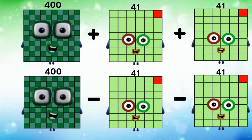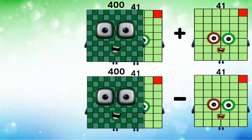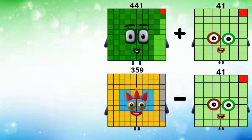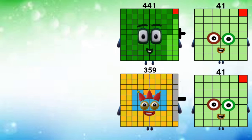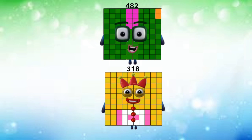400 plus and minus 41 equals 441 and 359. Then 441 plus 41 and 359 minus 41 equals 482 and 318.